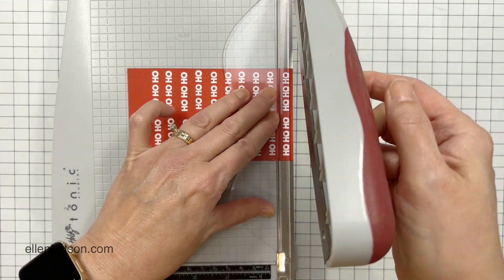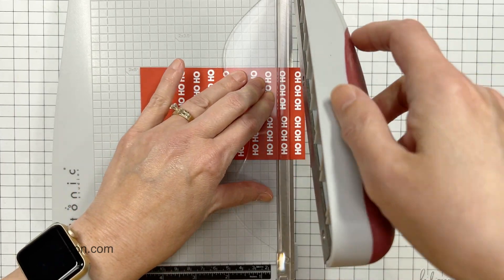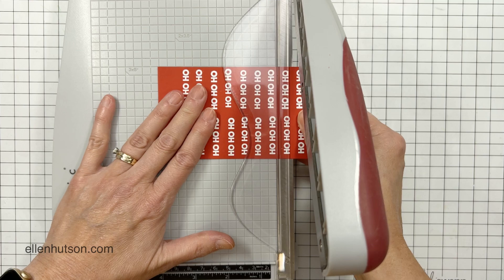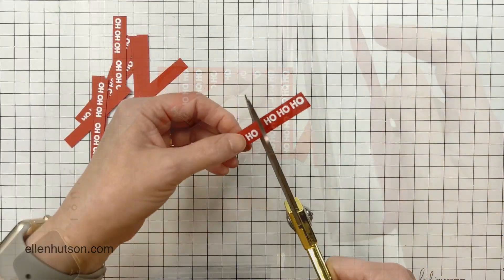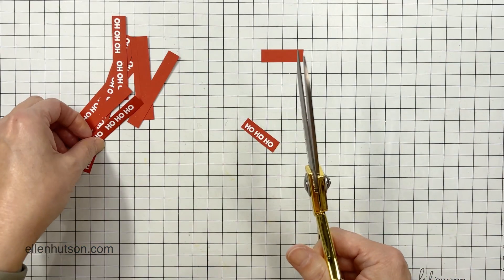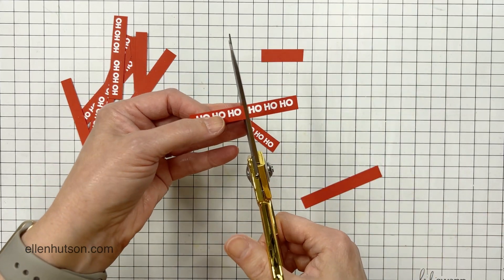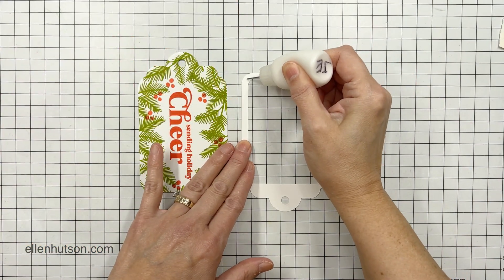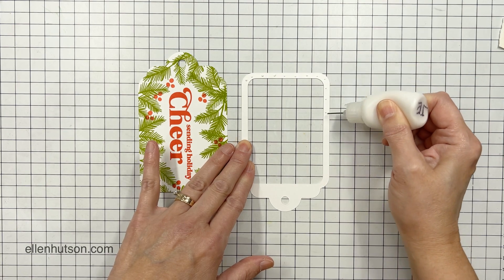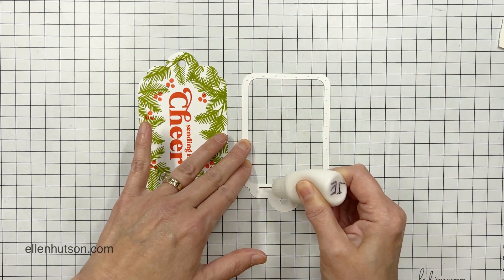And then we can trim them out lickety-split. So I'm just going to grab my Tonic Bypass trimmer and just very quickly get all those cut into a nice little pile. And I tried to be pretty even with my stamping, but you know, if it's a little cattywampus, it's okay. Then I grabbed my scissors and just quickly split those in half. That was faster than using even the trimmer.